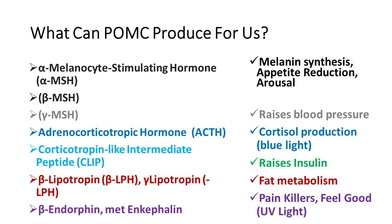Then we've got ACTH, which is produced from POMC and is really important for cortisol production. We die without cortisol, so we need the right amount at the right time — it's only a problem when it's being stimulated all the time or at a level that's too high or too low. There's also another protein important for regulating insulin called CLIP, or corticotropin-like intermediate peptide.